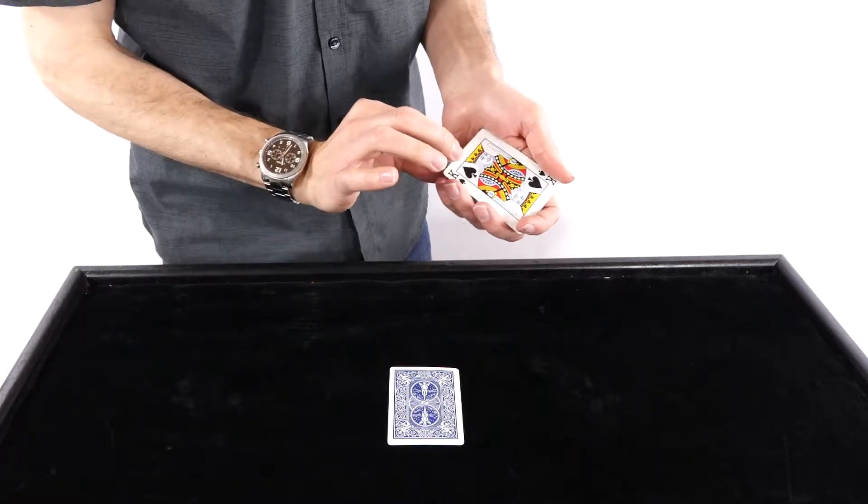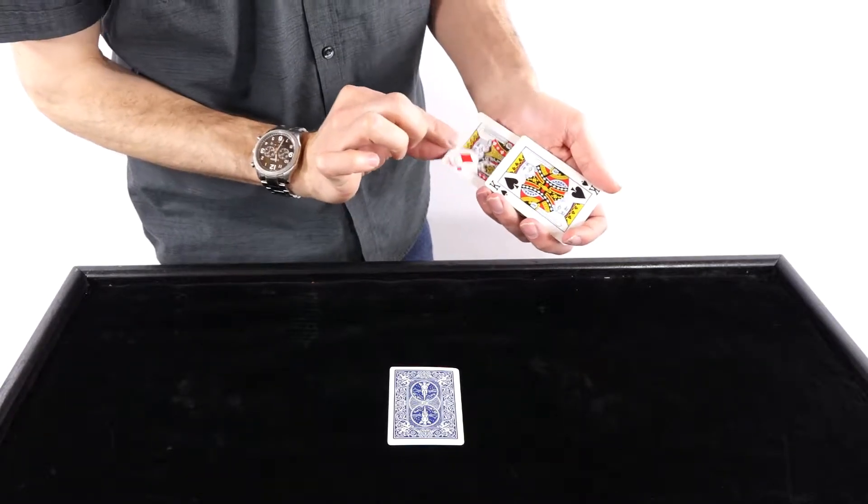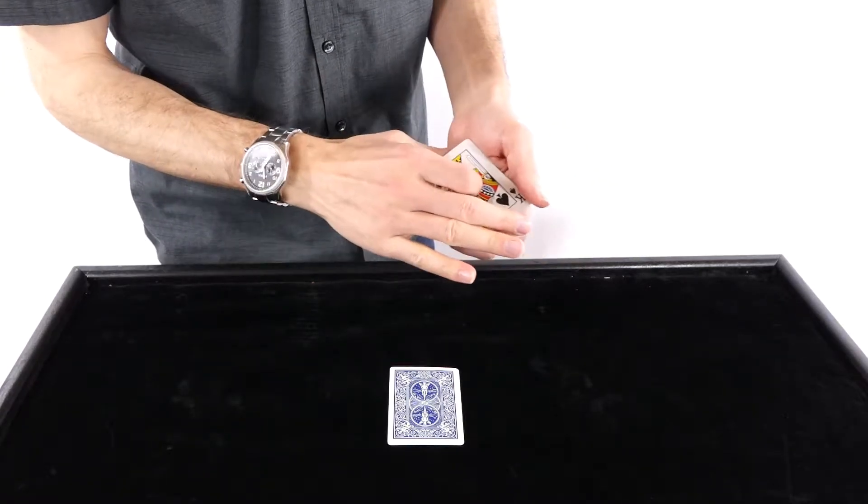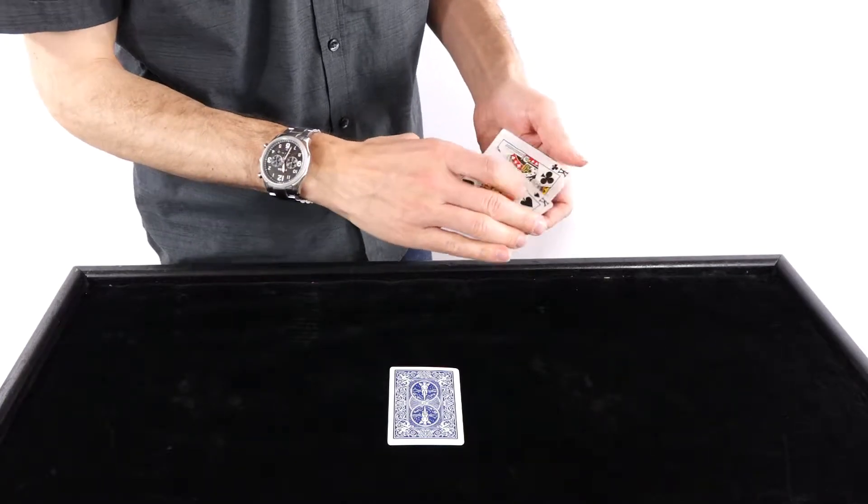And you can choose which king. Sometimes I'll let them choose. If you want the bottom one, I think that's the king of diamonds. Or maybe you want the top one, the spade. Or maybe the other black one, the club.